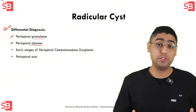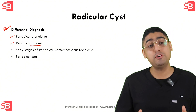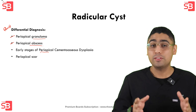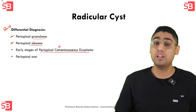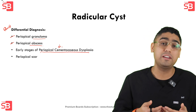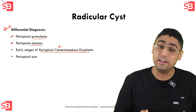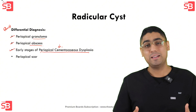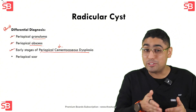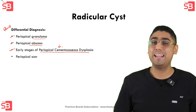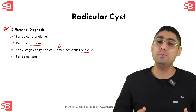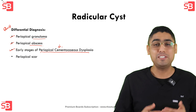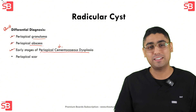We should also consider periapical cementoosseous dysplasia. This condition commonly appears in the lower anterior teeth and may initially resemble a cyst. However, as it matures, it takes on a mixed radiolucent-radiopaque appearance, which is a distinguishing feature.